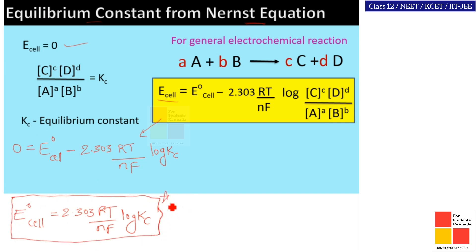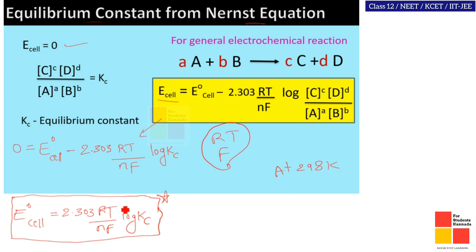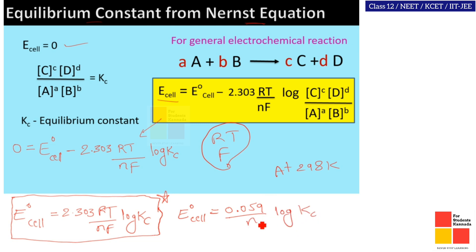To find out Kc, we know the R value, T value, and F value. We substitute at 298 Kelvin into the equation, and we get: E naught cell is equal to 0.059 divided by n, log Kc. This is also an important equation.